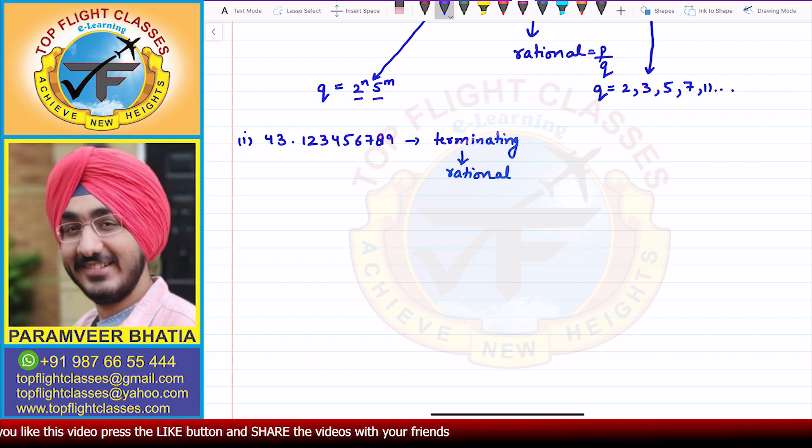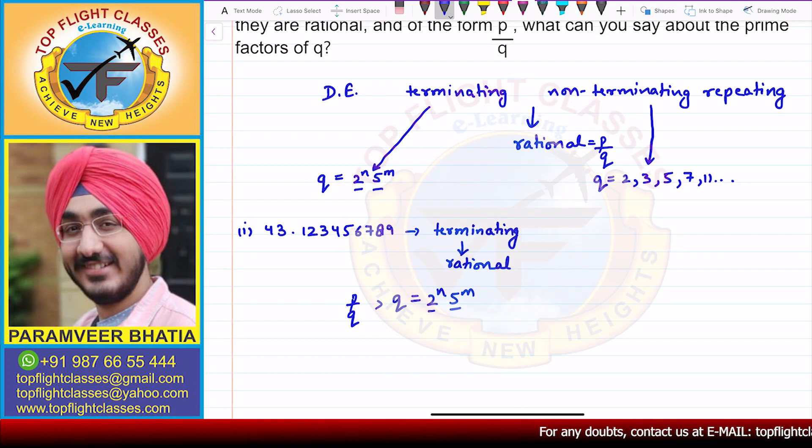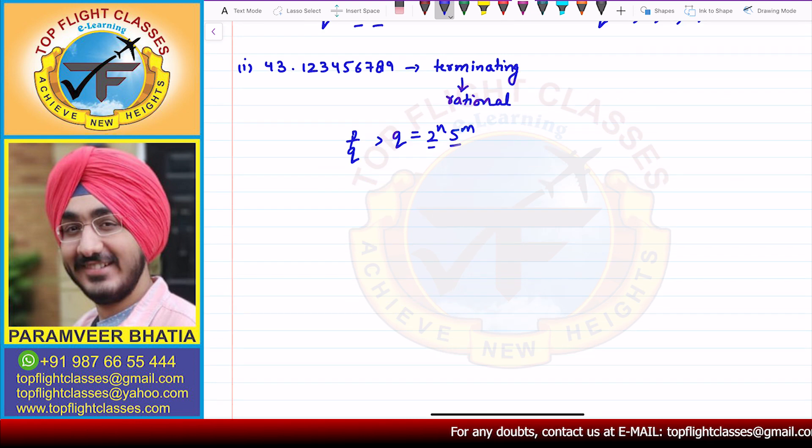Now since it is terminating, it will be of the form 2 to the power n and 5 to the power m. That means the prime factors of q will only be 2 and 5. And that is what is being asked in the question - what can you say about the prime factors of q? So prime factors of q are only 2 and 5.